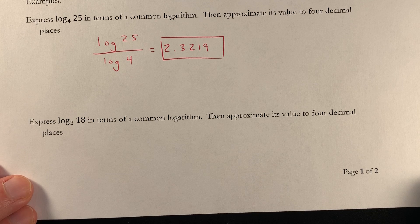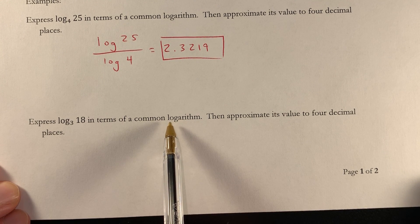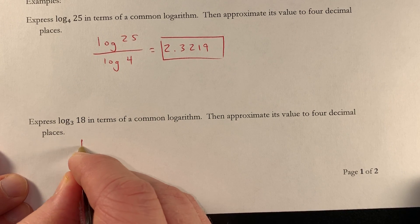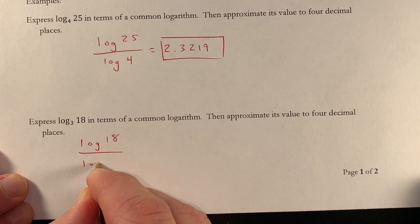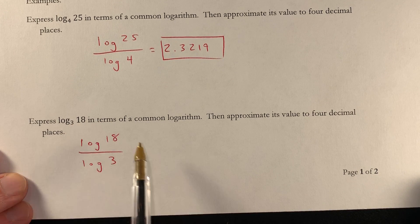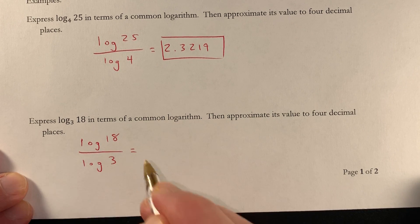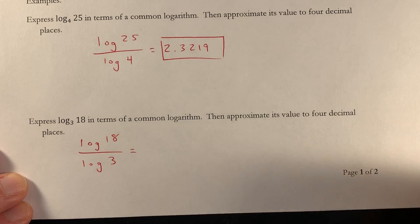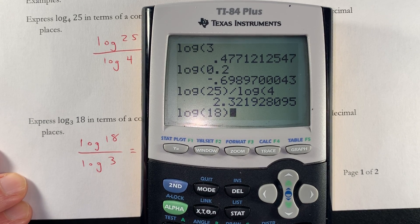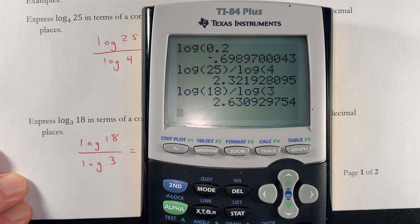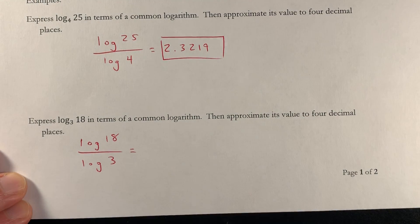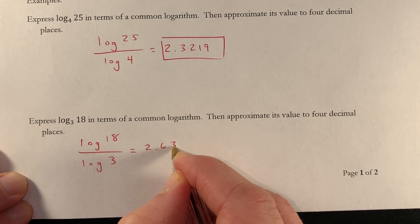And then again, evaluate by first putting in the common log, using the change of base formula, then approximate to 4 decimal places. With the change of base formula, that's log of the argument divided by log of the base. And why is it called the change of base formula? Because we used to have a base 3, now we have two logarithms with base 10. So it's in that common log form. Then we type that in the calculator: log 18, close the parentheses, divided by log 3. We get 2.6309. That fifth digit is not big enough to bump the fourth one up. So that's 2.6309.